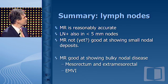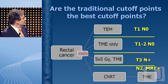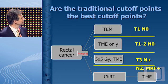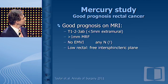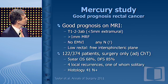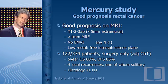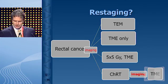For lymph nodes, MRI is reasonably accurate, but beware of small nodes. We are good at showing bulky nodal disease. The Mercury study has shown that if you define good prognosis on MRI — including small T3 and disregarding small lymph nodes — those patients treated with surgery only do very well. Small positive lymph nodes or a small T3 behave more like stage one regarding local recurrence. So we should rethink our staging strategy.